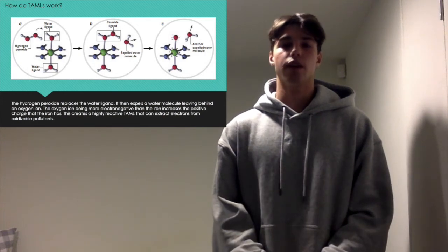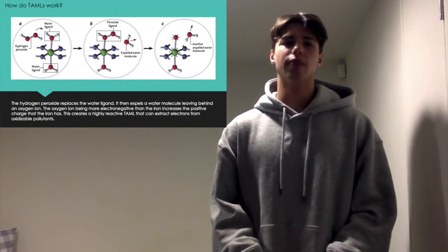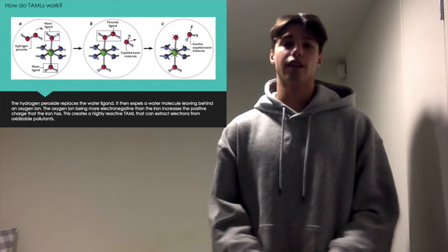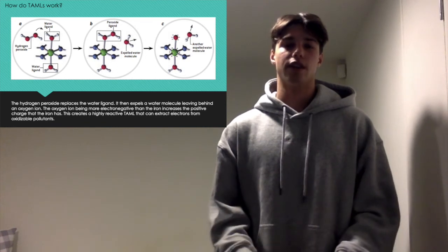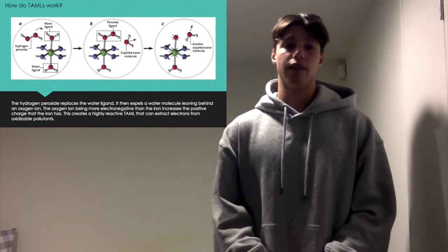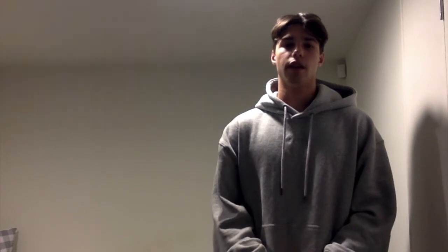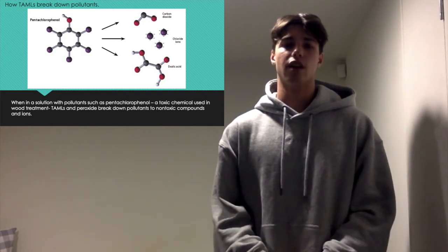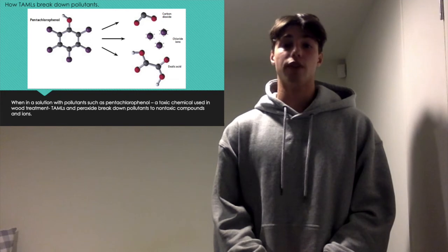Hydrogen peroxide, H2O2, is a strong oxidizing agent that, when paired with TAMILs, can fully destroy many pollutants in a matter of seconds. When TAMILs are in a solution with pollutants and hydrogen peroxide, the hydrogen peroxide replaces the water ligand. The peroxide ligand then discards both its hydrogen atoms and one of its oxygen atoms in the form of water, leaving behind a negatively charged oxygen. The oxygen being more electronegative than the iron causes the electrons to be pulled closer to the oxygen, resulting in a larger positive charge on the iron. This means that the TAMIL is reactive enough to extract the electrons from oxidizable pollutants. The strong positively charged iron breaks down pollutants into non-hazardous compounds and ions. The hydrogen peroxide and TAMILs after the process decompose in a matter of minutes, making them safe for the environment and for human consumption.